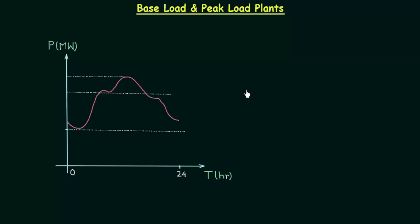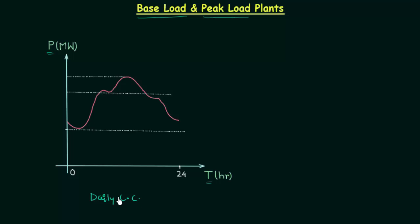We now understand the load curve completely. In this presentation we will talk about base load plants and peak load plants. You can see the load curve on your screen. The y-axis is for power in megawatt, the x-axis is for time in hours, starting from 0 and ending at 24 hours. This means this is a daily load curve. We also have monthly and yearly load curves but we mainly focus on daily load curves.